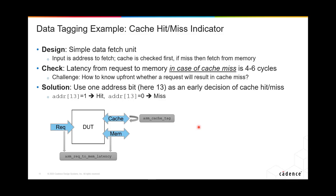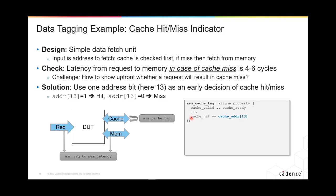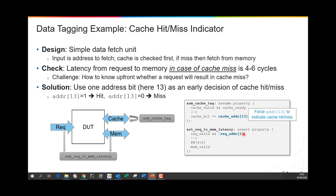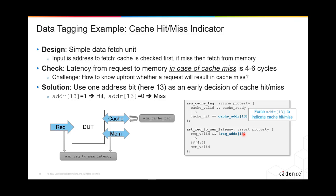We need an assumption that will do that for us. This assumption ensures that the cache hit signal indicates whether there will be a hit or miss. So if the cache is valid and ready, cache hit will equal whatever the value of bit 13 is in the address. If we have a request valid and that bit is not set, there's going to be a cache miss, requiring four to six cycles and mem valid. If there is a cache hit, we don't require that, because we won't be going out to external memory.